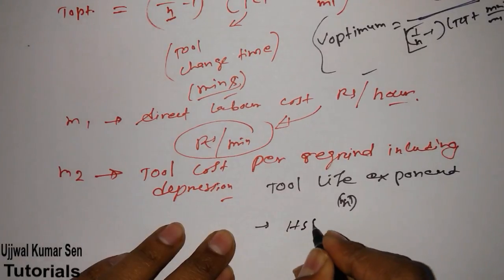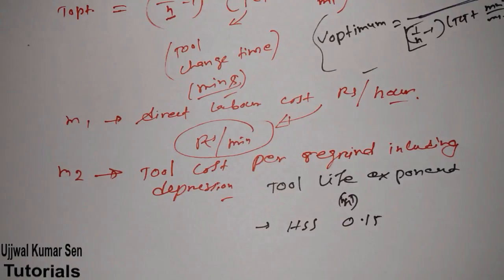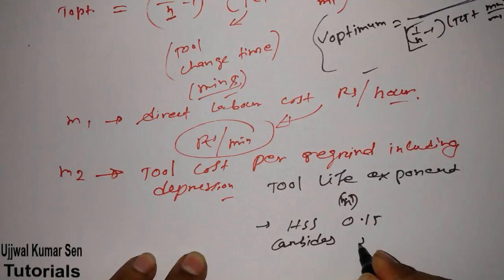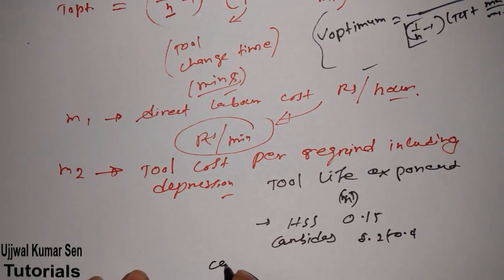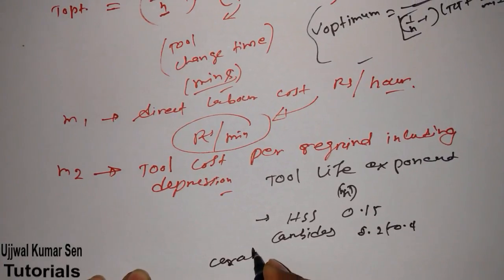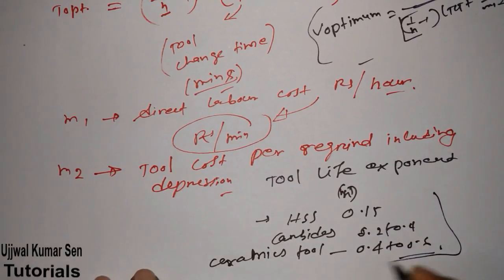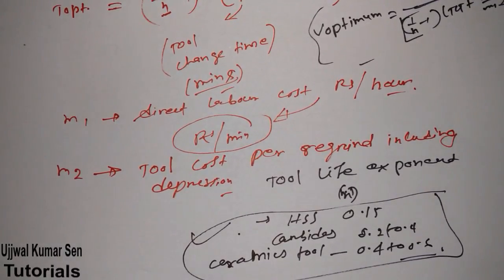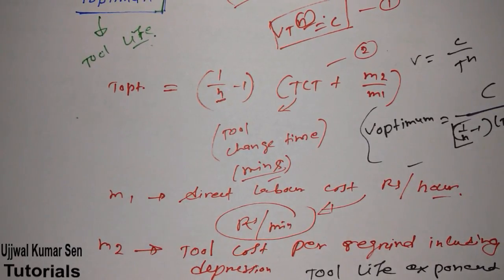Suppose that we have high speed steel. Its exponent value is 0.15. If we have carbides, its value is 0.22 to 0.4. Now think about we have ceramics tools. Then its value is 0.4 to 0.6. So these values you can remember. Probably it will be helpful for you in future. So this is all about T-Optimum, V-Optimum, and tool life exponent. And of course, the numerical problem which I have shared with you.